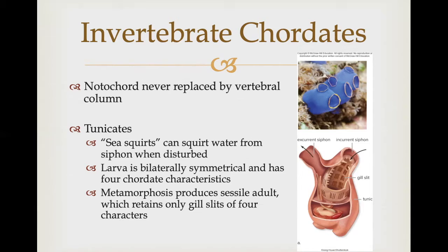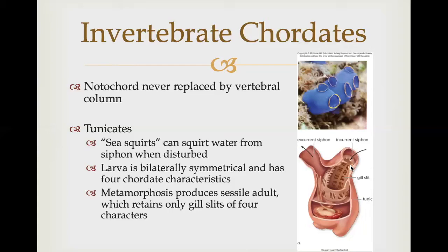Another invertebrate chordate is the lancelet, a marine chordate only a few centimeters long with the appearance of a small two-edged surgical knife. Lancelets are found in shallow water along most coasts, where they lie partly buried in sandy or muddy substrates with only their anterior mouth and gill apparatus exposed. They feed on microscopic particles filtered from a constant stream of water that enters the mouth and exits through the gill slits.